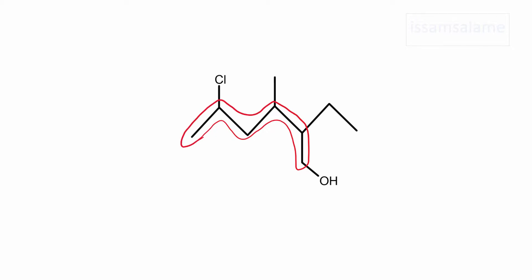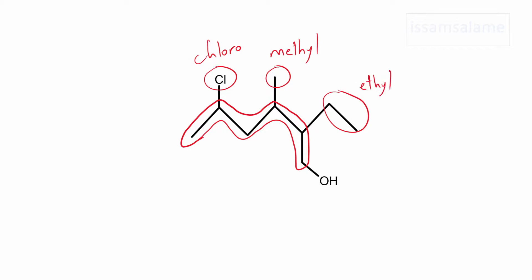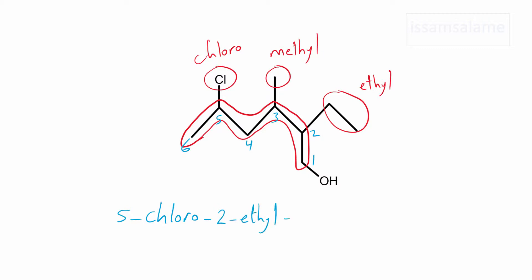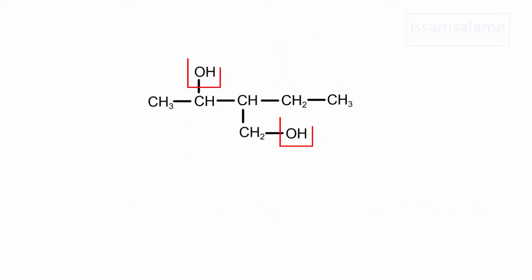Here is another example using the skeletal formula. This is the longest chain. We have three branches: chloro, methyl, and ethyl. As before, we start numbering from the end closer to the hydroxyl group. The name is going to be 5-chloro-2-ethyl-3-methyl-1-hexanol.